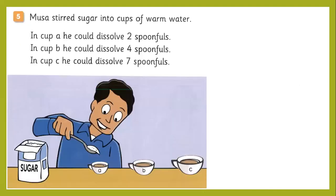Here is the experiment: Musa stirred sugar into cups of warm water — not very hot water, just warm. Musa has three cups: A, B, and C. He is putting different amounts of sugar — two spoonfuls in cup A, four spoonfuls in cup B, and seven spoonfuls in cup C. What do you think — will all the sugar mix in each cup?